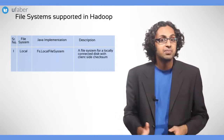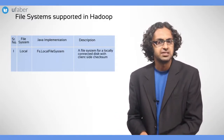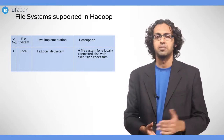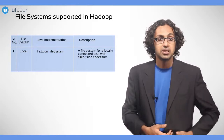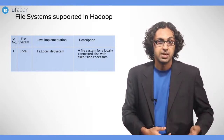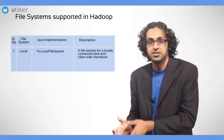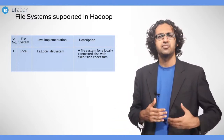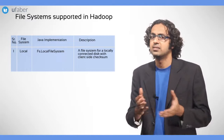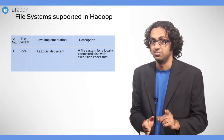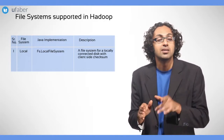Local: every machine has a separate file system. For example, NTFS, FAT, EXT4, etc. This is known as the local file system. We can use a local file system in a Hadoop cluster using its Java implementation, fs.local filesystem. It can be described as a file system for a locally connected disk with client-side checksum. Checksum is a technique to make sure that there is no error in the data.